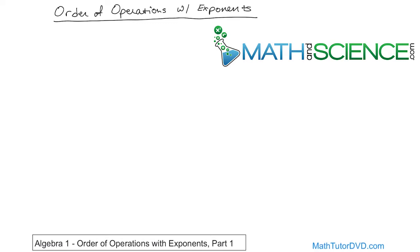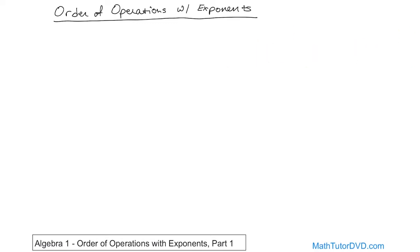The top most important priority is you do the parentheses or brackets, whatever was written down. You always do those first, inner to outer. Which means if you have multiple sets of parentheses nested inside one another, you always do the innermost ones first, then work your way to the outermost ones. That's the number one thing you do.